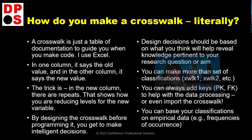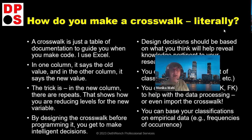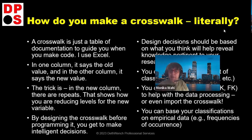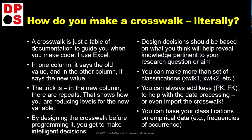Let me go through the steps. A crosswalk is just a table of documentation to guide you when you make code. I use Excel. In one column it says the old value, in the other it says the new value — you're designing a new variable. The trick is the new column has repeats, which shows how you're reducing the levels of the new variable. By designing the crosswalk before programming it, you get to make intelligent decisions using your human brain, not artificial intelligence, not some algorithm.